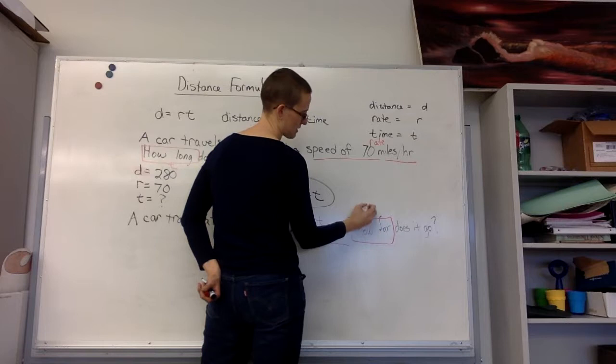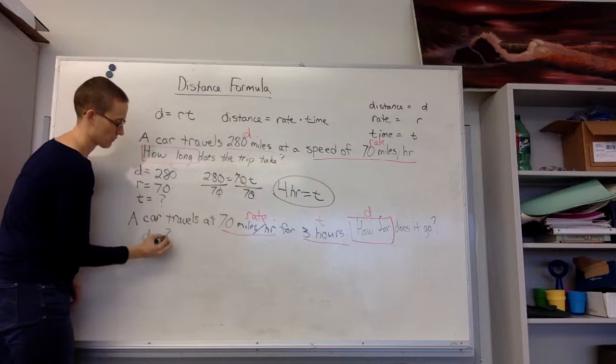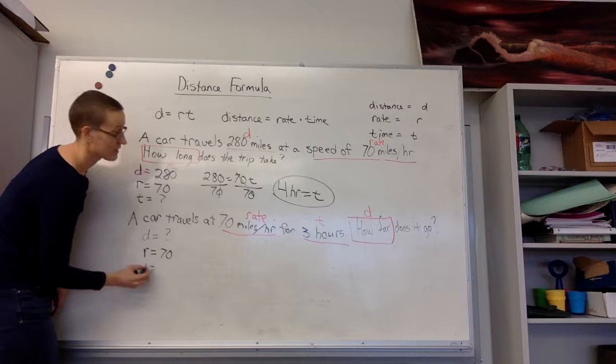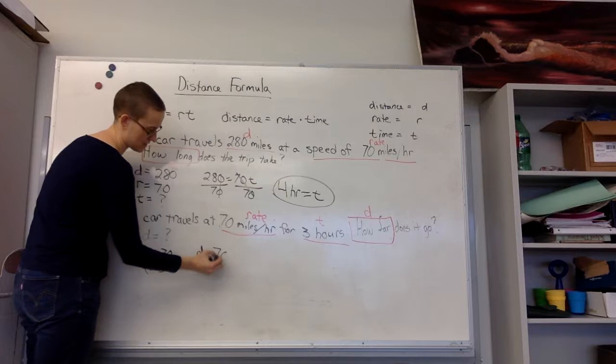So I'll list out all the different pieces. My distance is unknown. My rate is 70. My time is 3. So let's plug these into the equation: distance equals rate times time. Distance is my unknown, rate is 70, and time is 3.